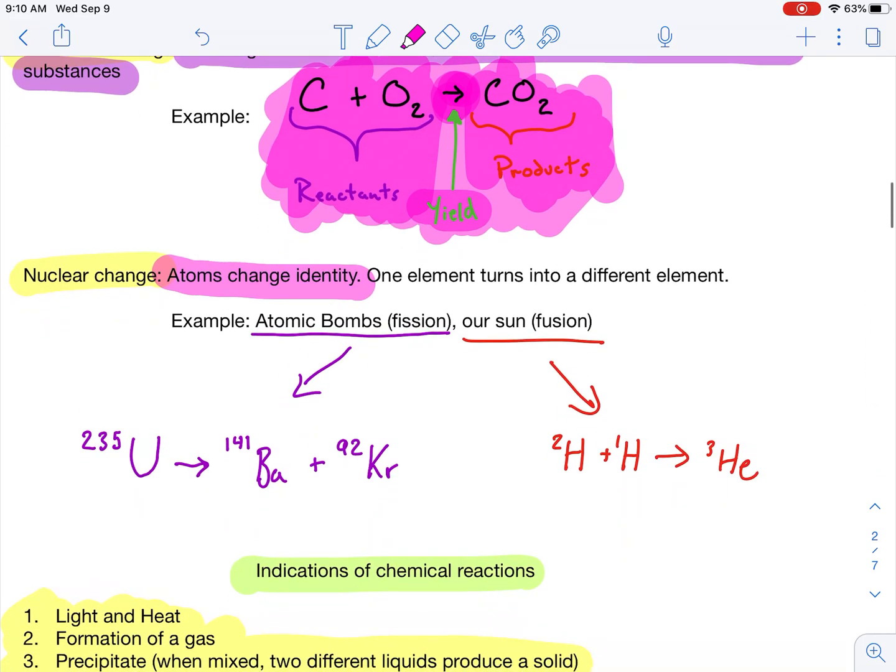If I were to change the identity, now we're talking about a nuclear change. There are two types of nuclear changes. You have when atoms are split apart, such as this uranium splitting to barium and krypton, and when atoms are combined together. So, I can take two hydrogen atoms and combine them into helium. Fission and fusion is what we're talking about there.